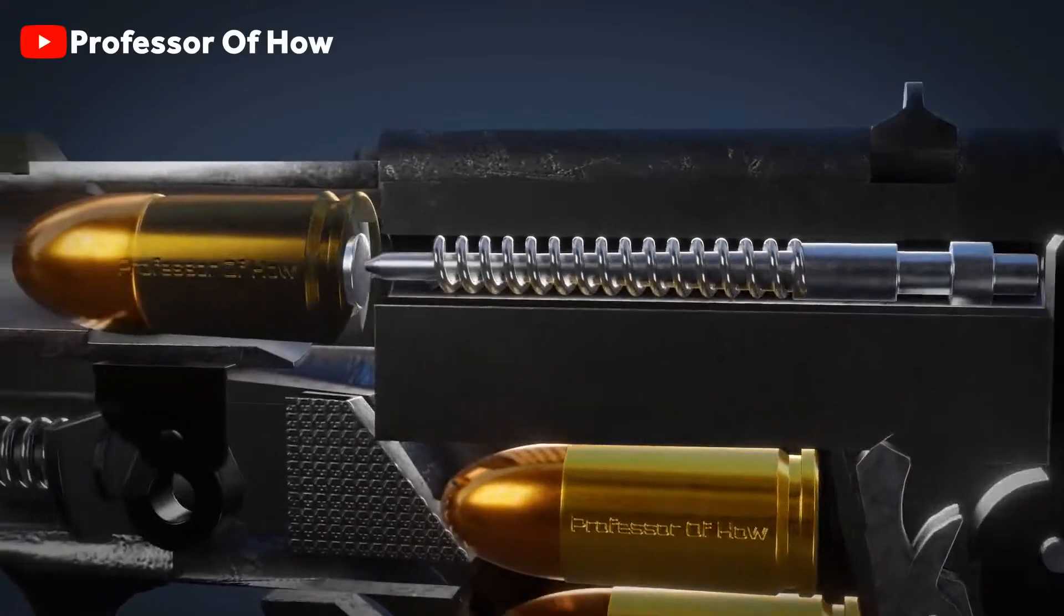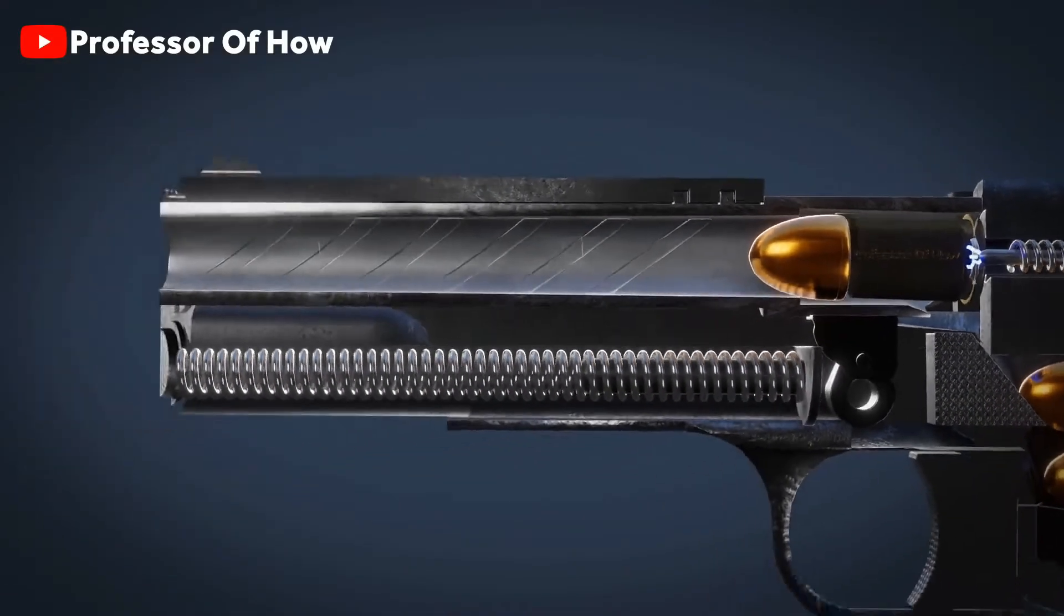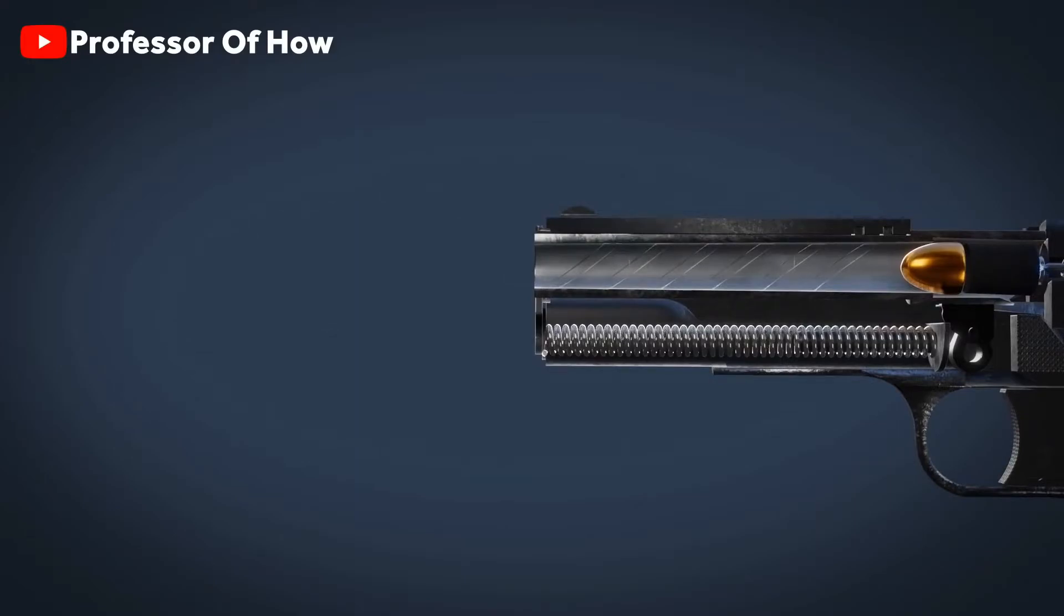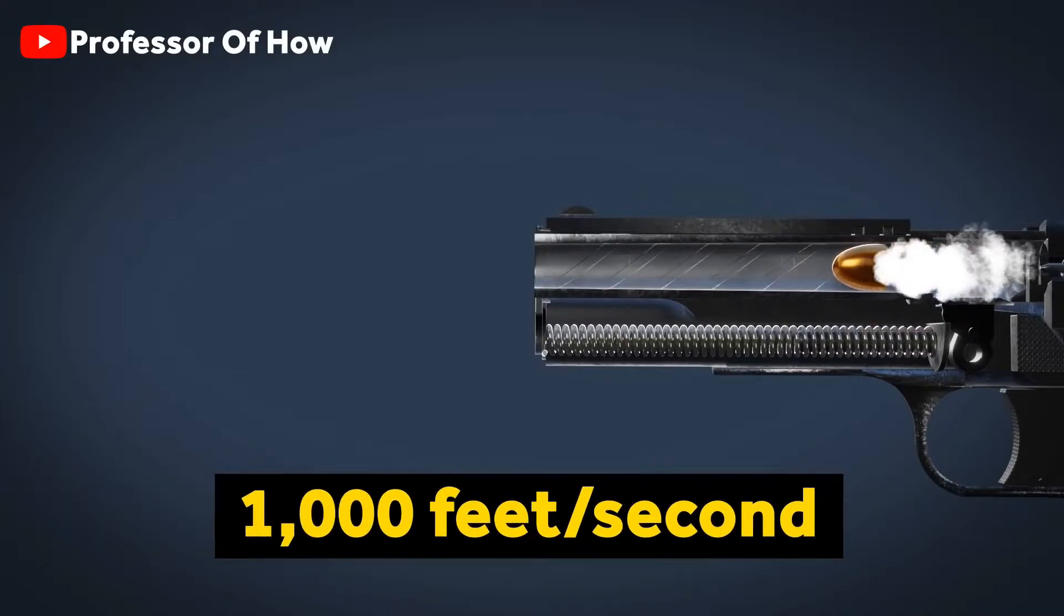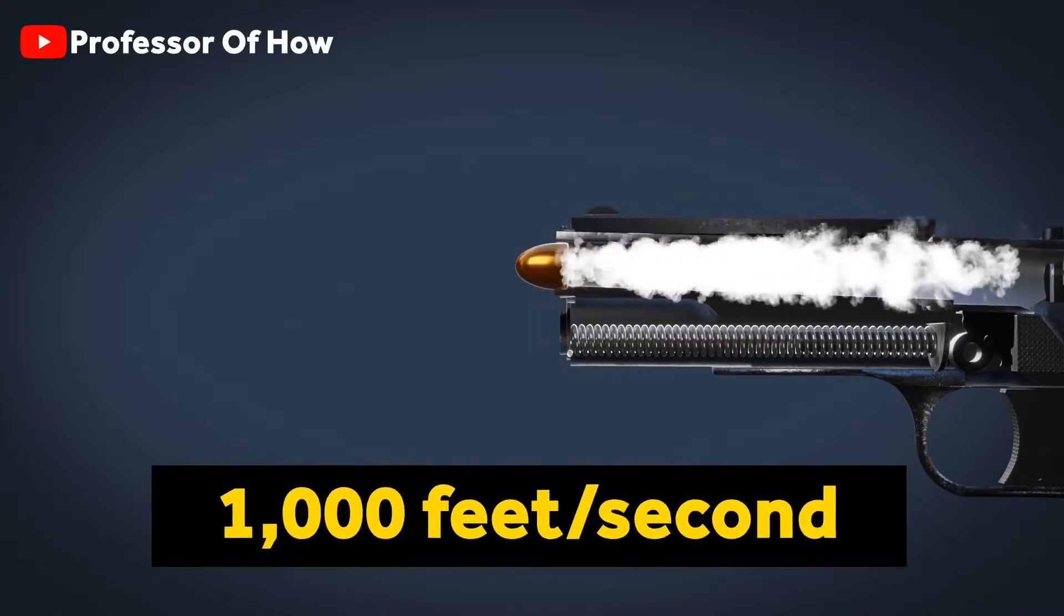Following this, the spark will take birth, and the propellant will catch fire. Many high-pressure gases will take birth here as soon as propellant catches fire, which will push the bullet ahead with a speed of 1,000 feet per second.